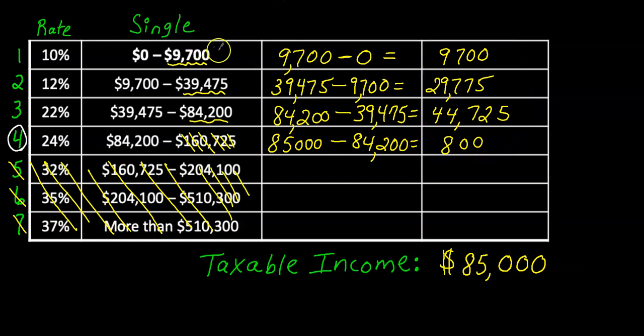So now we're getting close to figuring out how much we owe. What I'm going to do now is take the $9,700 and multiply it by this 10% right over here. Remember, 10% is 0.10. So I'll take $9,700 times 0.10 and that's going to give us $970.